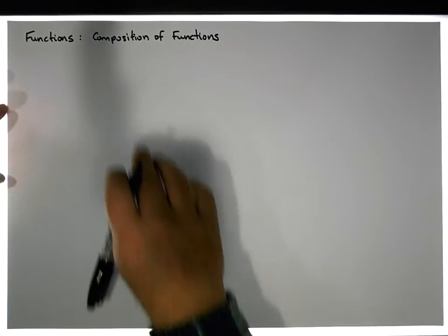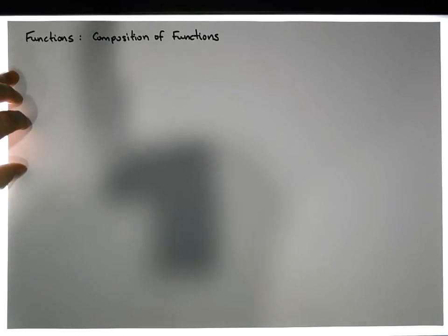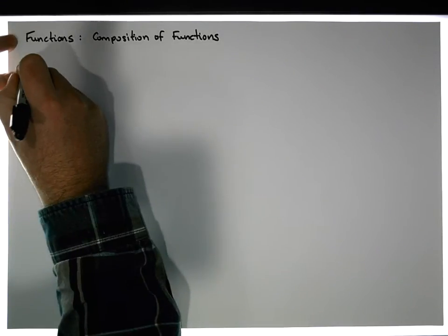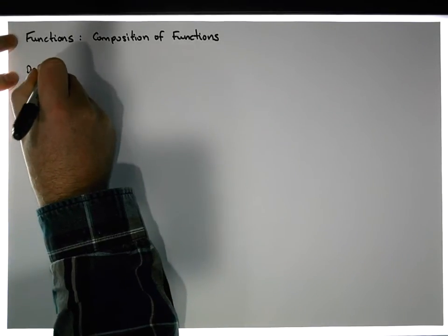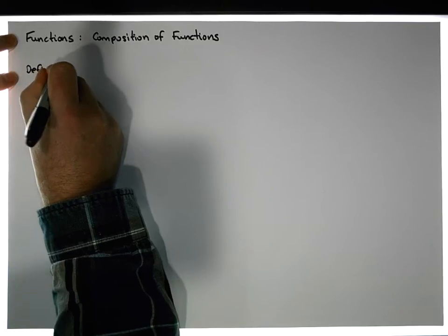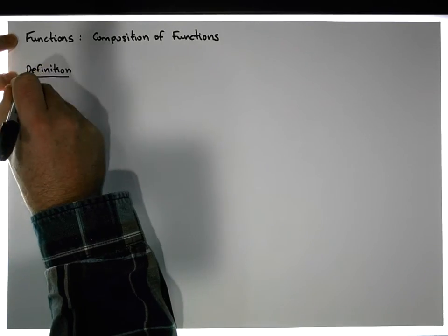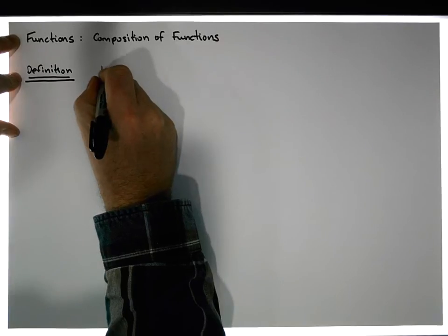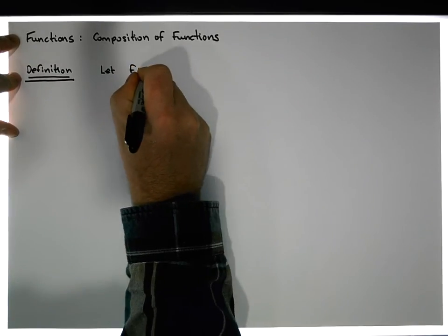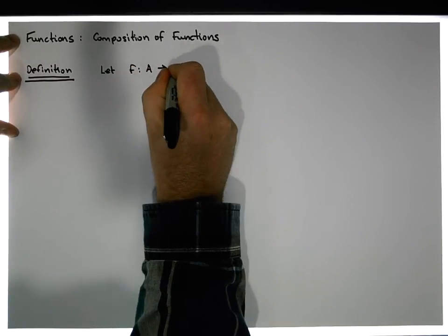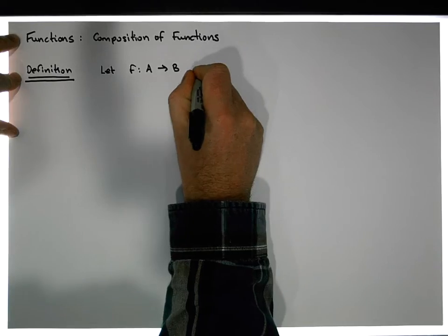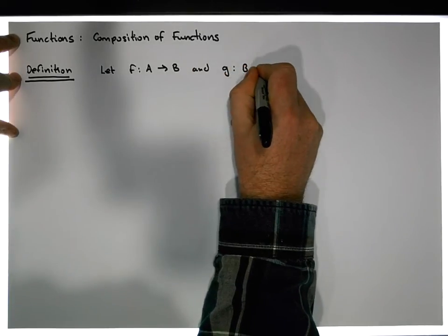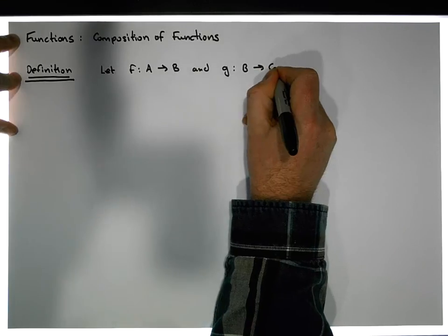Before we can get there, we probably need a definition of what we mean by composition of functions. So let's provide a definition. Let f be a mapping from a set A into another set B, and g be a mapping from a set B into another set C.